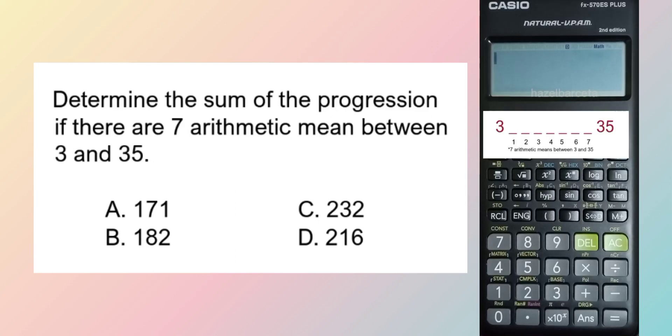Determine the sum of the progression if there are seven arithmetic means between 3 and 35.